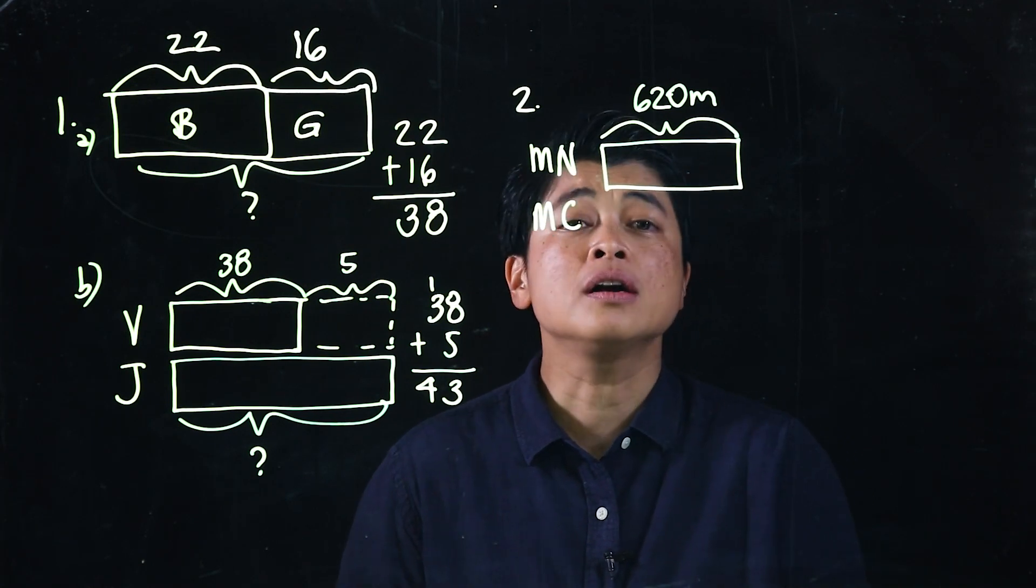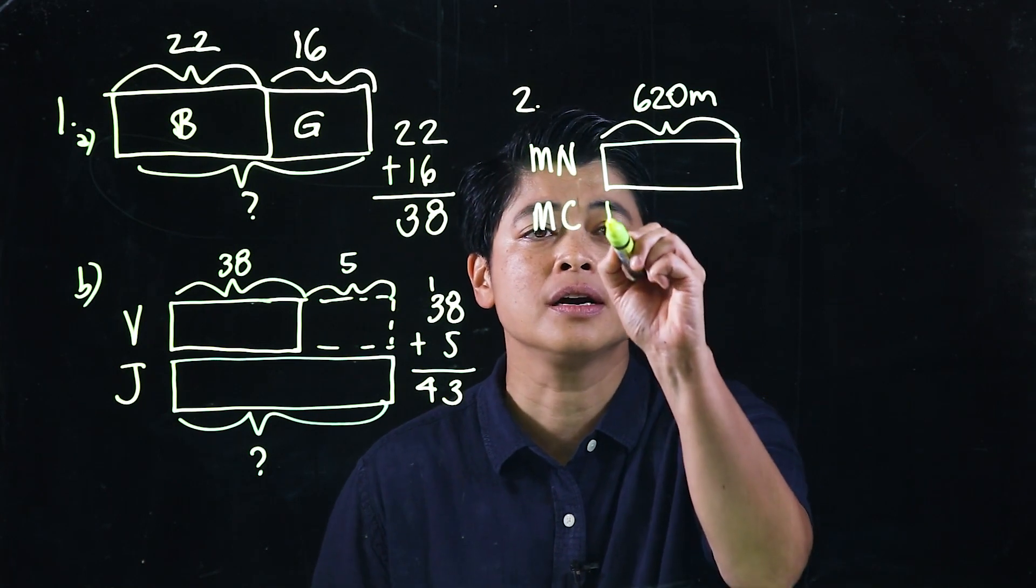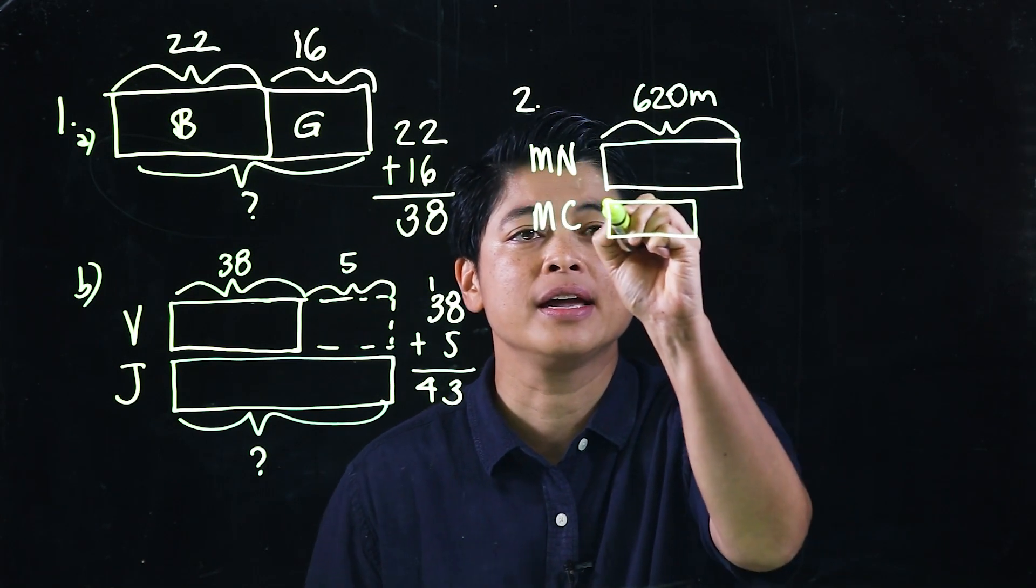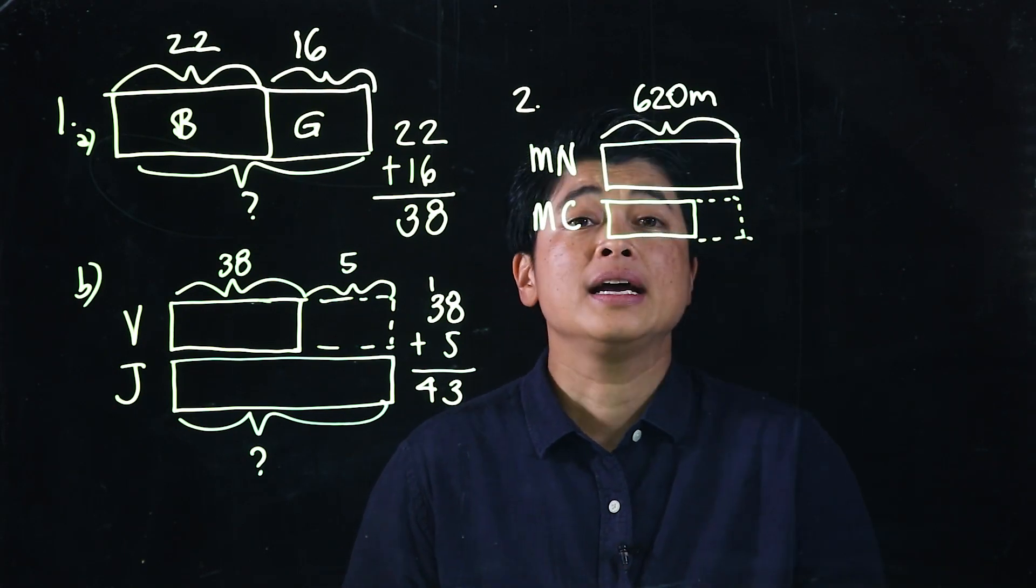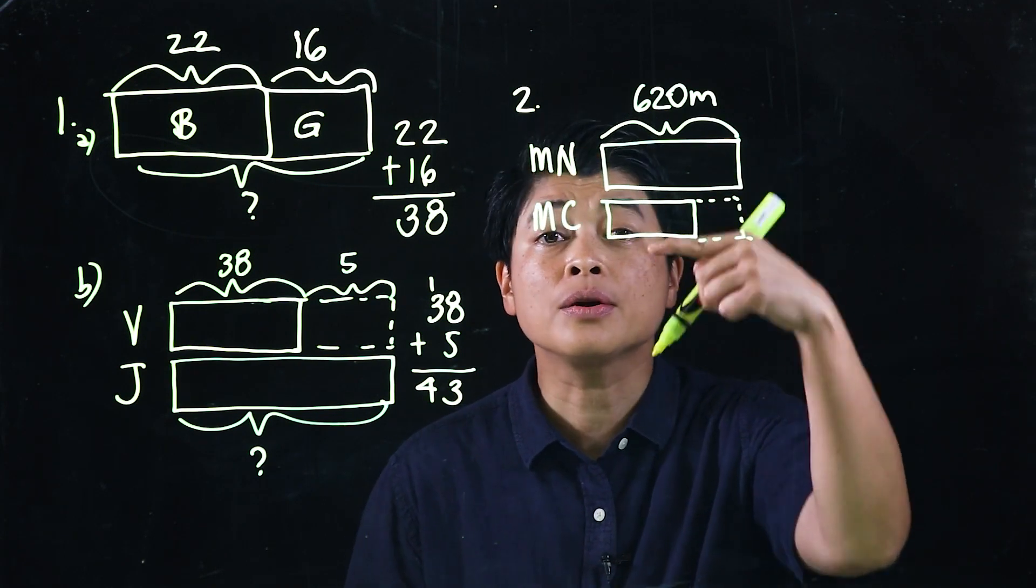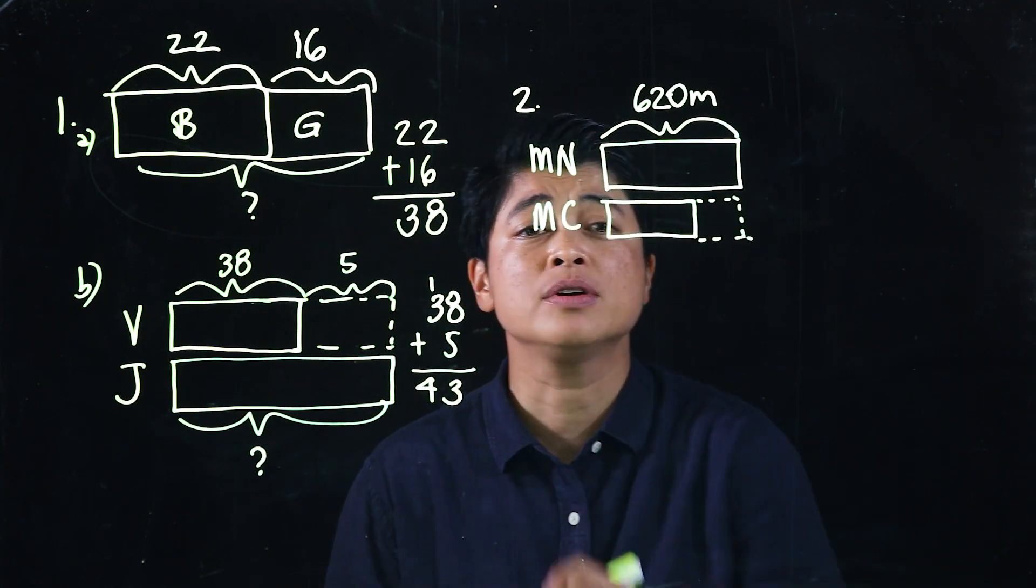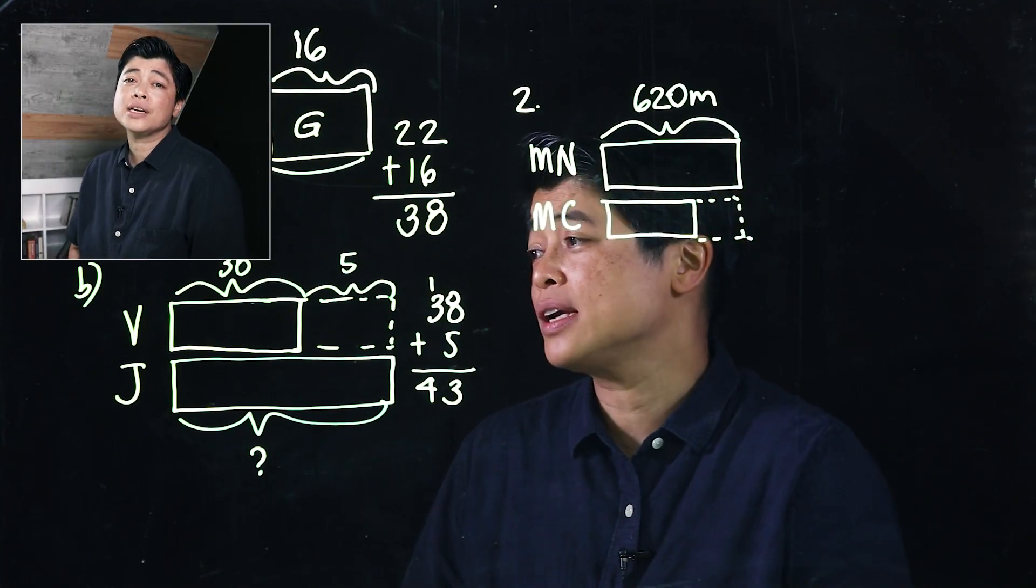Okay, Mr. Nang had 620-meter fence. His fence is longer than Mr. Chang, so that's longer. So Mr. Chang is shorter. Okay, so again, in the book, their drawing is the other way around. So that means Mr. Chang was on top, Mr. Nang is on the bottom.